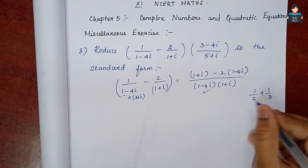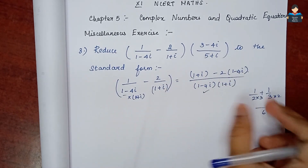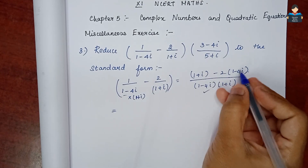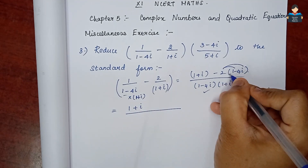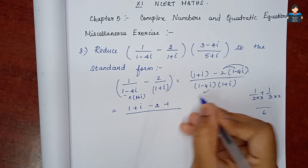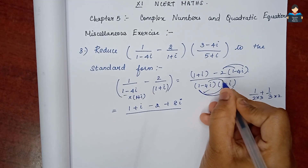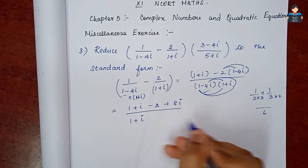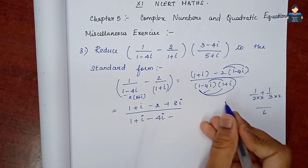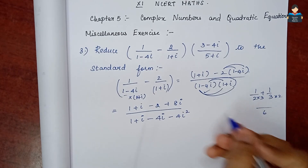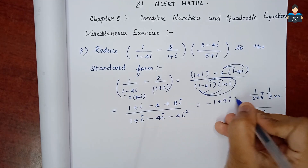We need to find a common form. Multiply with (1+i): so minus 2 plus 2 into 4 gives 8i. Then 1 into 2, multiply minus 4i, multiply (1+i): minus 4i minus 4i² . Solving: 1 minus 2 minus 1 plus 9i, giving i plus 8i = 9i.